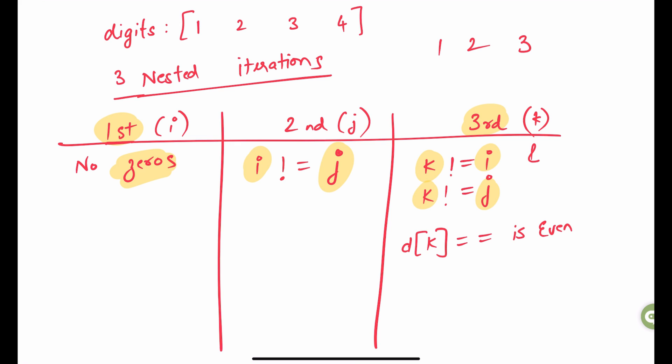Along with that, you also need to make sure that d or digits at k position is an even number. As this iteration will help us get the number for the units place, it cannot have anything besides the even number. That is, the value can be 0, 2, 4, 6, and 8.